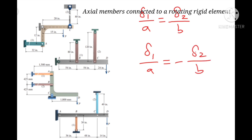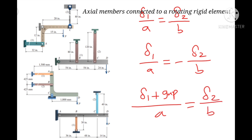When we have a gap or clearance, the geometry of deformation equation becomes: delta 1 plus the gap divided by a equals delta 2 divided by b. For example, when we apply a load P, member C elongates downward and member B also elongates downward, giving deformation of 2 divided by a equal to elongation of rod 1 divided by AB.